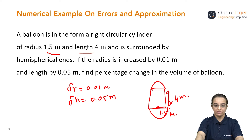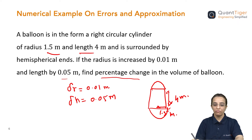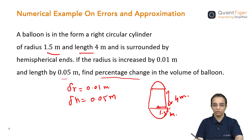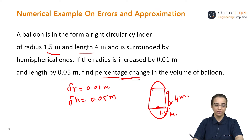What they are asking is: find the percentage change in the volume of the balloon. Obviously the volume will change because the variables r and h are going to change. We have to find how much the volume has changed because of the changes in r and h.